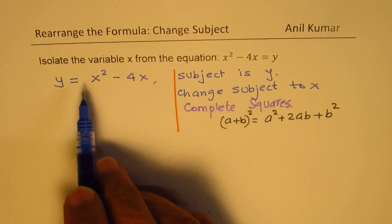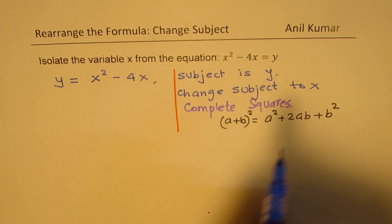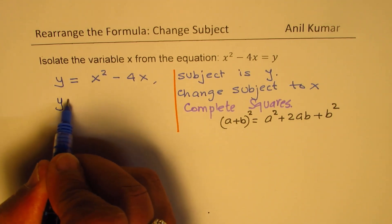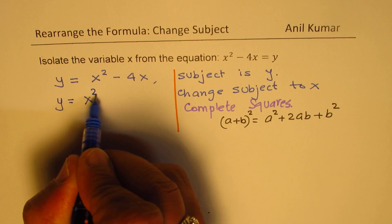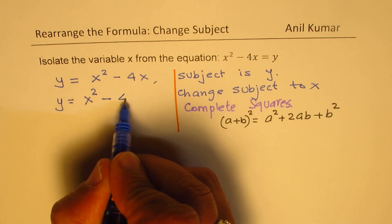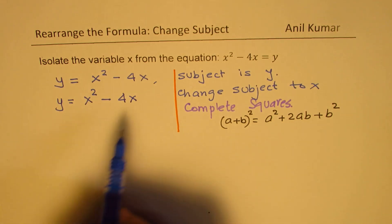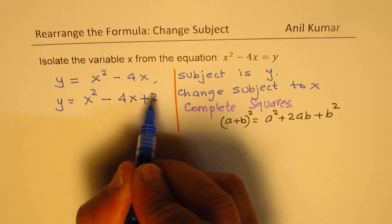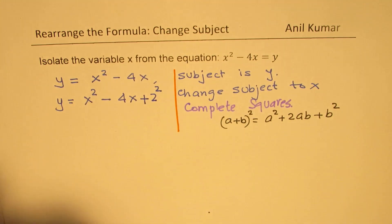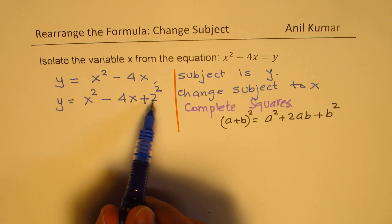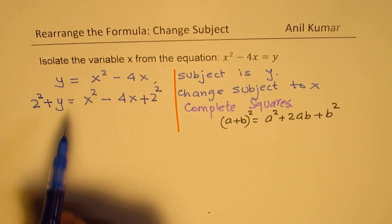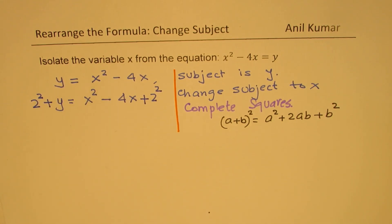What we are doing here is we have x squared, we'll do half of 4 and rewrite. So we have y equals to x squared minus 4x. Now, half of 4 is 2. So what we do here is that we add 2 square on both the sides. We added half of 4 square on both the sides.